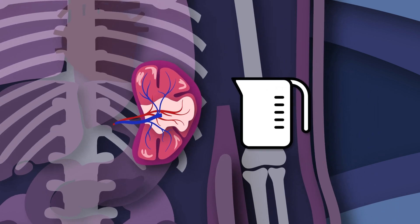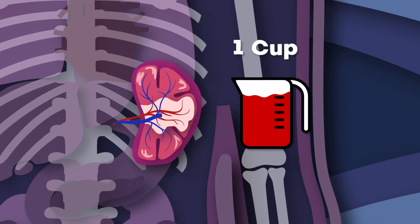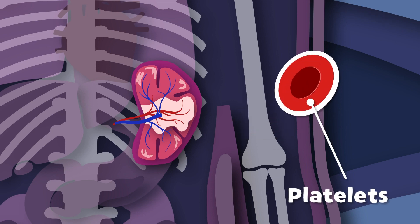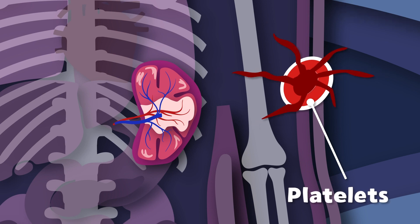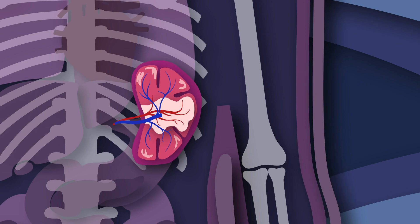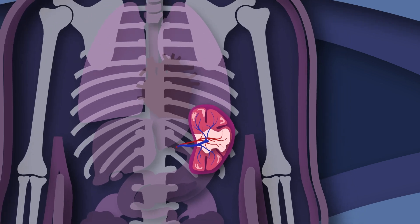The spleen stores up to a cup of blood for your safety, ready to be released if there's a significant loss of blood. Many platelets are also stored within the blood in the spleen to help form blood clots to prevent further blood loss. Please take care of your body so you don't get sick, and if you do, the spleen will be there to help you fix it.